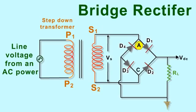the point A is positive with respect to C. The diodes D1 and D3 are forward biased and conduct,